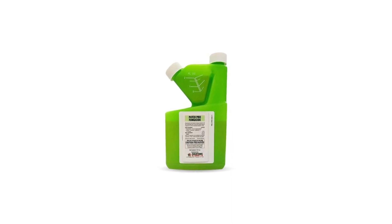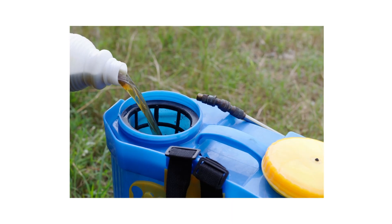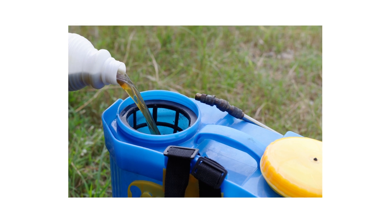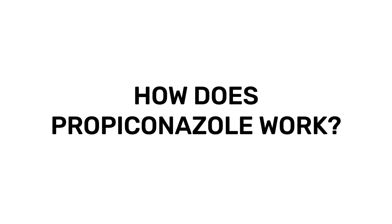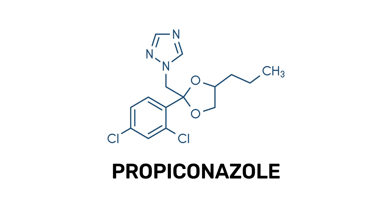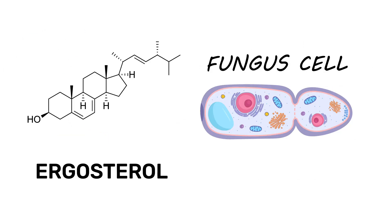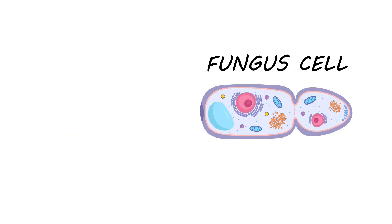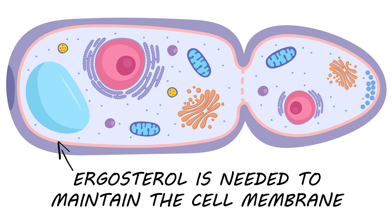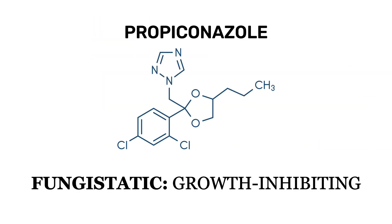You'll find propiconazole in many popular fungicide products that control fungi, bacteria, and viruses affecting plants. It can come in a variety of formulations but is often found as an emulsifiable concentrate. Propiconazole interferes with the synthesis of ergosterol, an essential molecule necessary for fungal formation, which affects cell wall development of fungi, slowing and eventually stopping growth. Because of this unique mode of action, propiconazole can be considered fungistatic, or growth inhibiting, rather than fungicidal, or fungus killing.